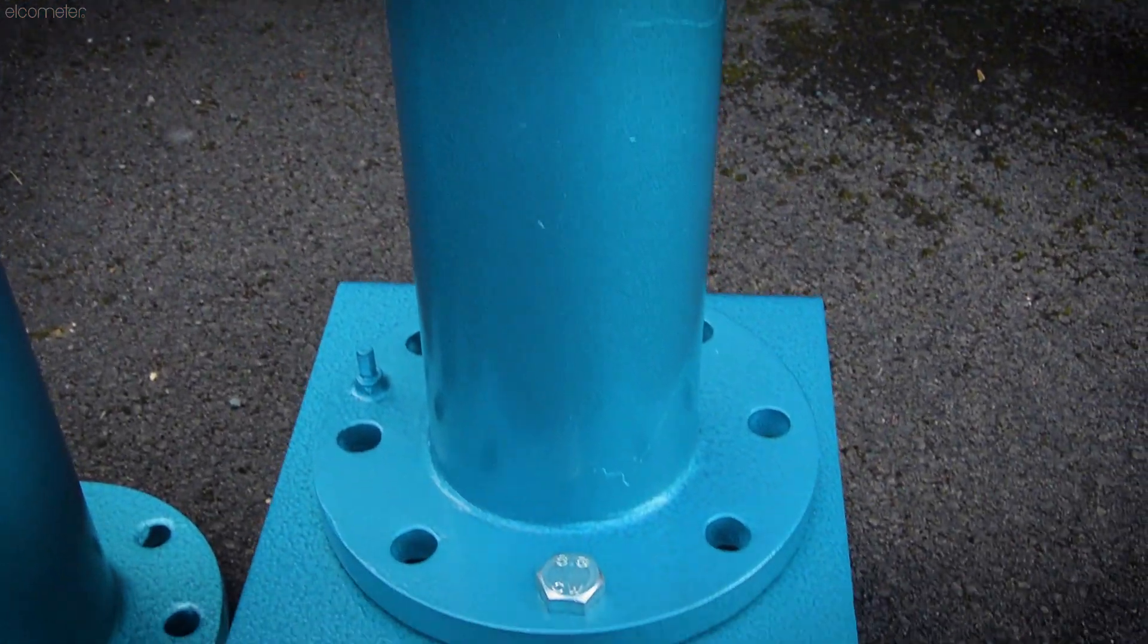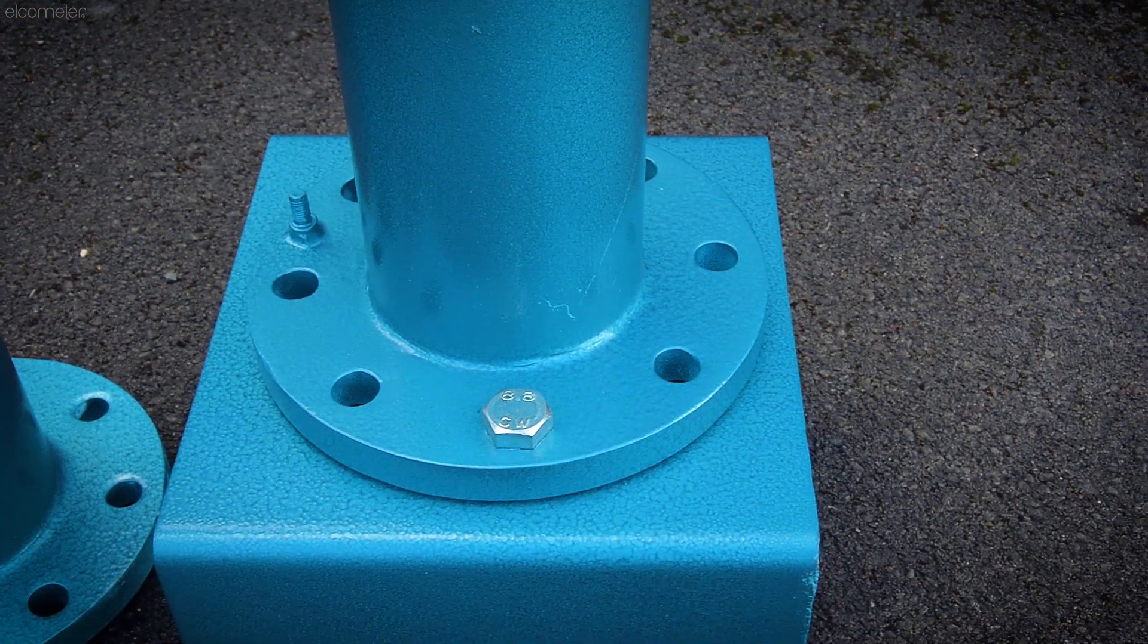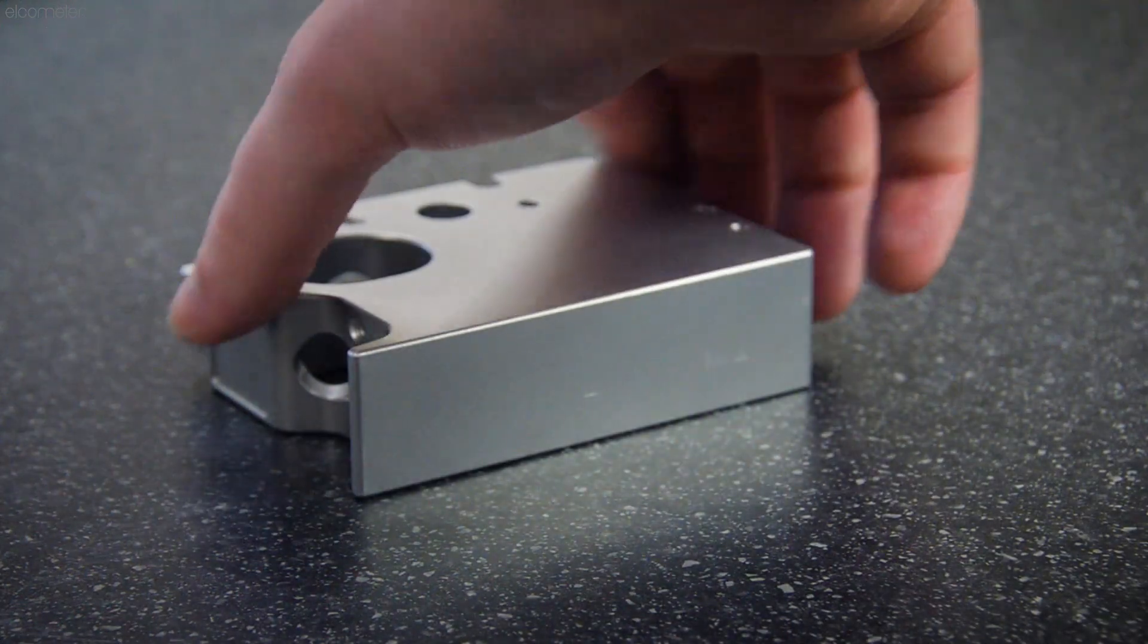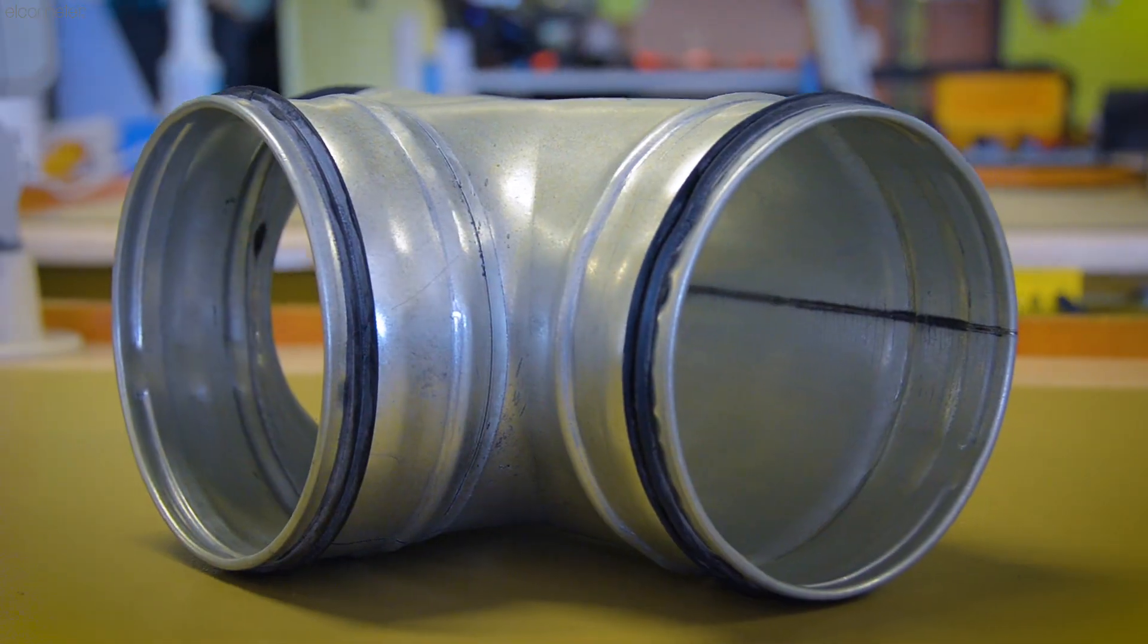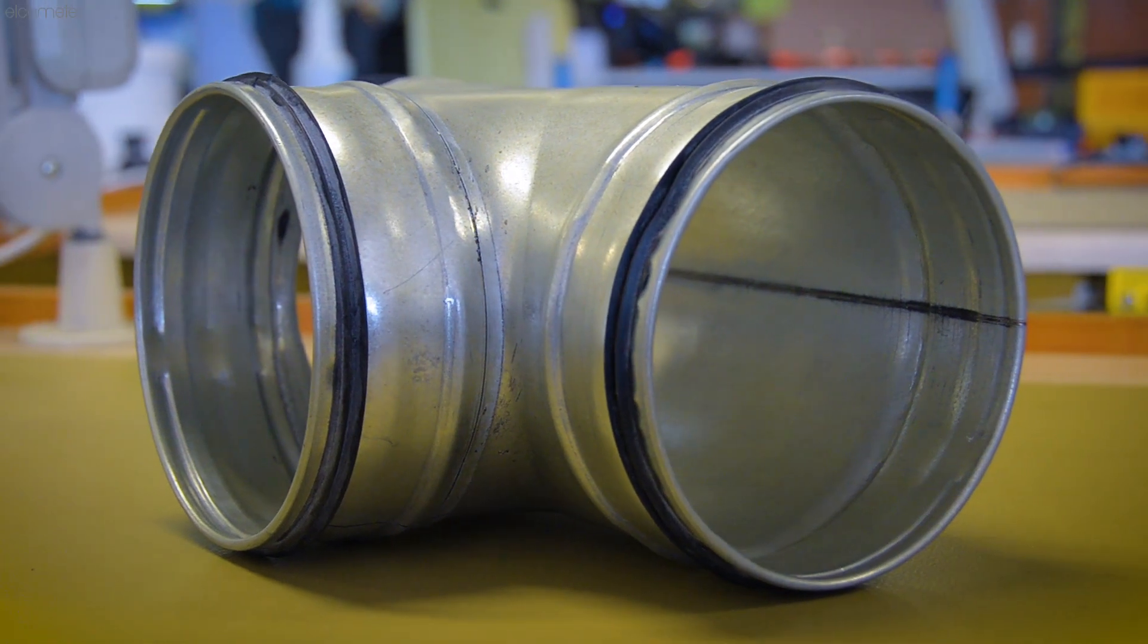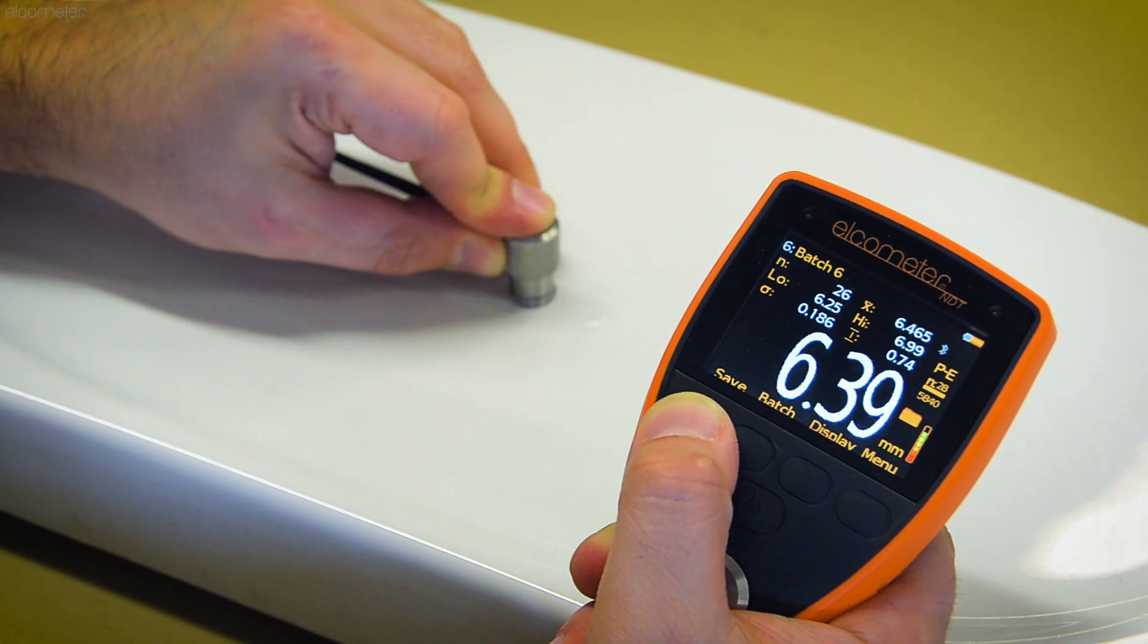But what if you want to non-destructively measure the thickness of a material that's already been coated, or measure materials other than steel, such as aluminium, copper, plastics, porcelain, or epoxies for example?